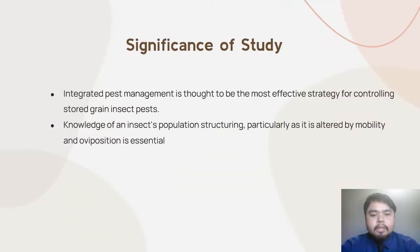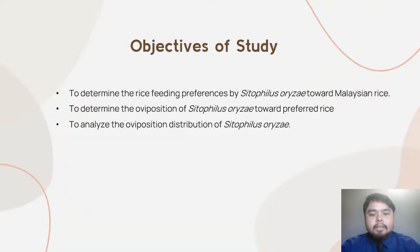For the significance of this study, due to post-harvest losses caused by rice weevils during grain storage, integrated pest management is thought to be the most effective strategy for controlling stored grain insect pests. Knowledge of insect population structuring, particularly as it is altered by mobility and oviposition, is essential for implementing more successful integrated pest management activities. This study aims to determine the rice feeding preference of Sitophilus oryzae towards selected rice, to determine the oviposition of Sitophilus oryzae towards preferred rice, and to analyze the oviposition distribution of Sitophilus oryzae.